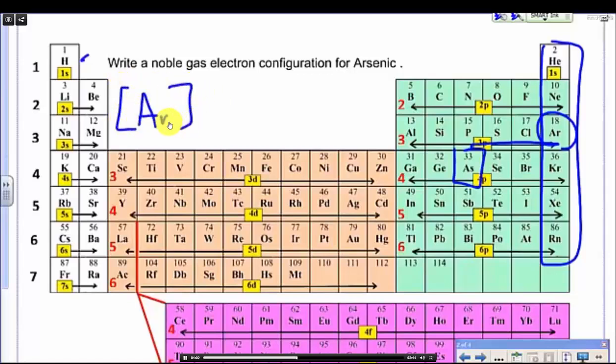Now, after argon, we still have a long way to go before we get to arsenic. So we have to include that electron configuration in. Here we have energy level 4, sub-level s. Within this 4s sub-level, there are 2 electrons.